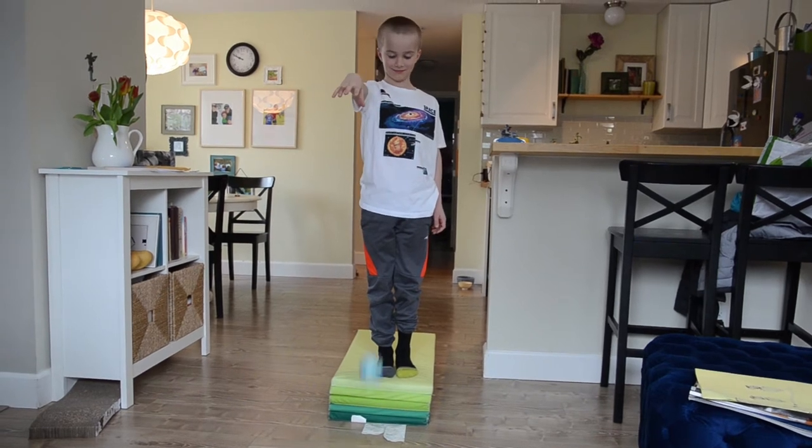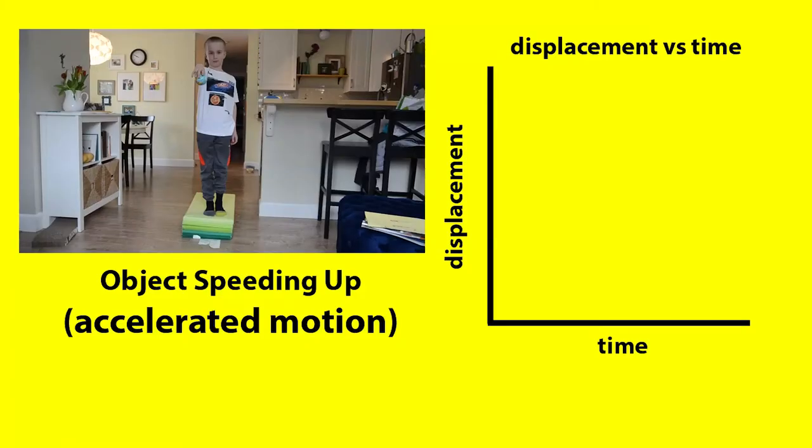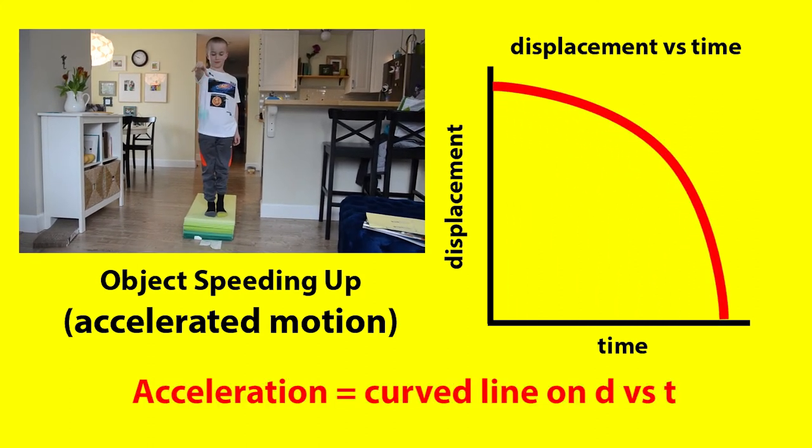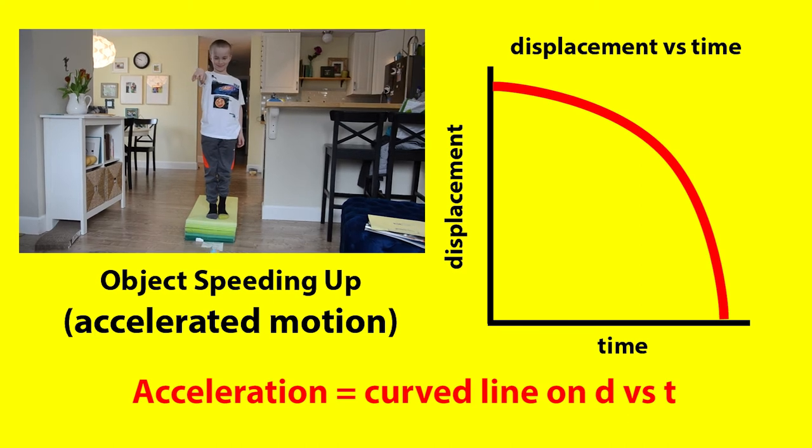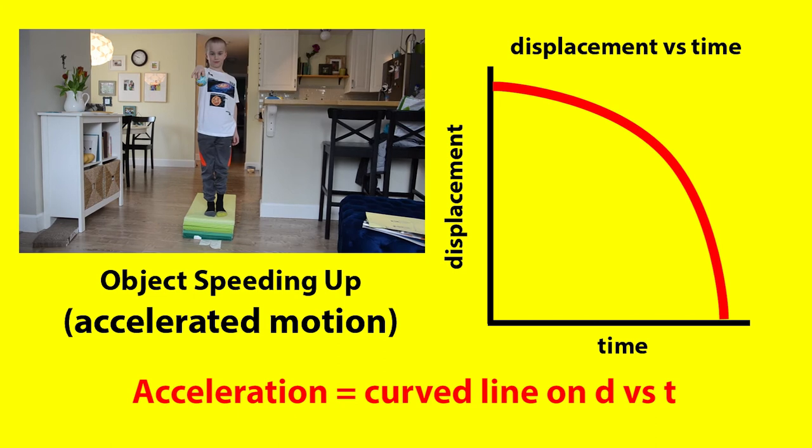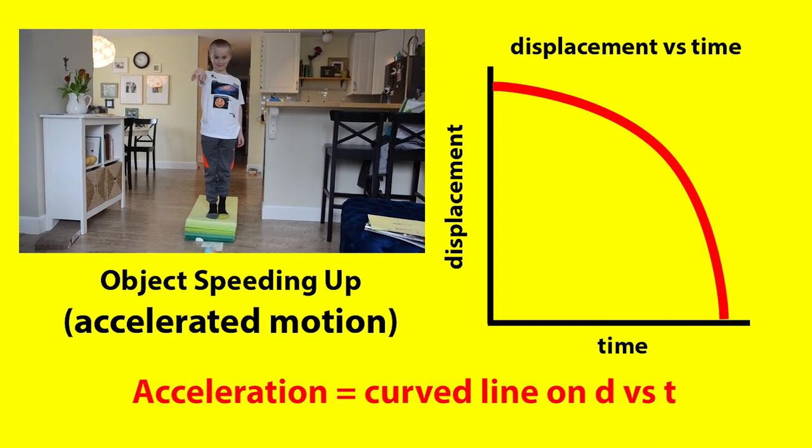What about an object that's accelerating? Well, the first thing you're going to notice is on that displacement versus time graph, it is a curve, which is going to be different from any other sort of uniform motion situation. The curved line in the D versus T graph means acceleration. So can you remember straight lines for uniform, curved for accelerated.